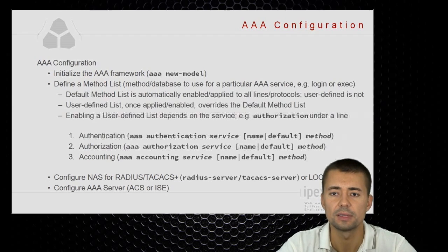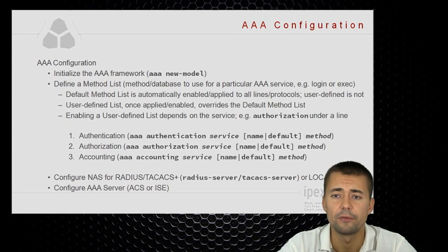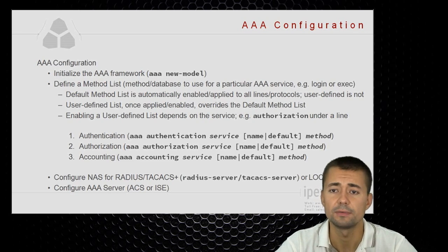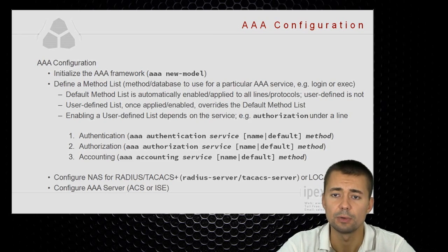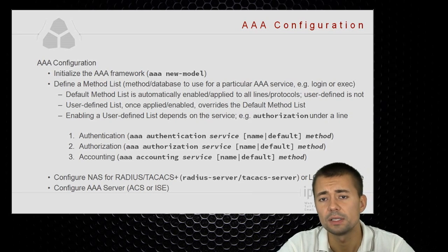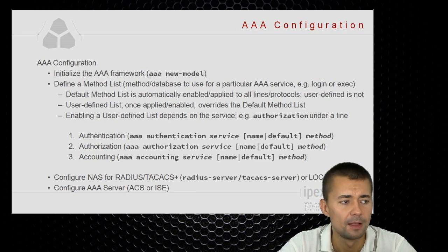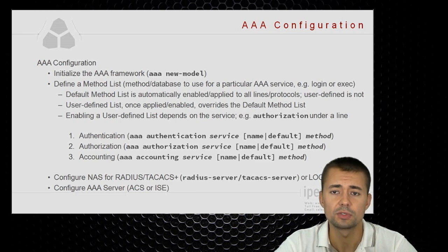The difference between the custom method list and the default method list is that the default one is automatically applied right after you define it. For example, if you define a default method list for the authentication function for the login service, this list will be automatically applied to all the lines that support the login service — the console, the auxiliary line, and the virtual terminal lines.